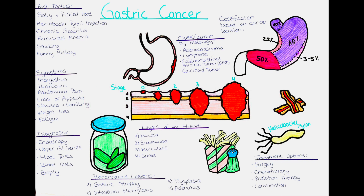Gastric cancer, also known as stomach cancer, is a type of cancer that develops in the lining of the stomach. It is the fifth most common cancer worldwide and the third leading cause of cancer-related death. The incidence of gastric cancer varies by geography, with the highest rates occurring in eastern Asia, eastern Europe and South America. The age of diagnosis is most often between 70 and 75 years.